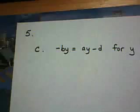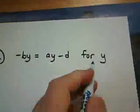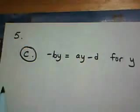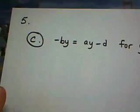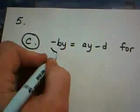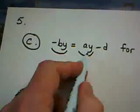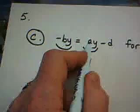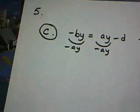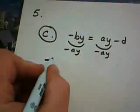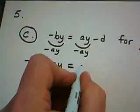This first equation, question number 5, part C, asks you to solve for Y. So what we have to do here is we have to get all of the terms containing Y on the same side of the equation. Right now, they're apart. If I want to put them together, the quickest way to do that is to subtract AY from both sides of the equation. So what that would give me is the opposite of BY minus AY, and this is equal to the opposite of D.